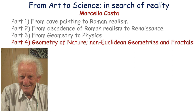Welcome back to my talks on 'From Art to Science in Search of Reality.' I am Marcello Costa from Flinders University. I have covered, until now in three parts, beginning from Chi painting to Roman realism, then the decadence of Roman realism during Christianity to Renaissance, then the geometry giving rise to modern physics.